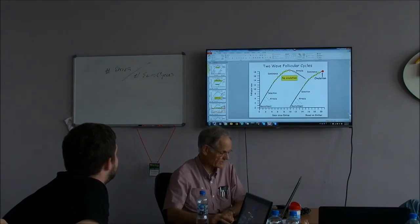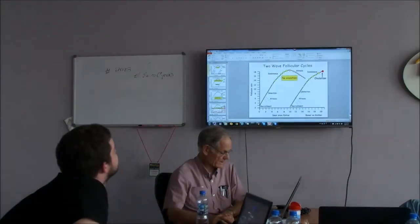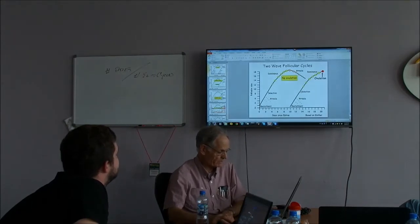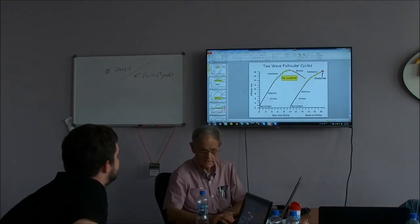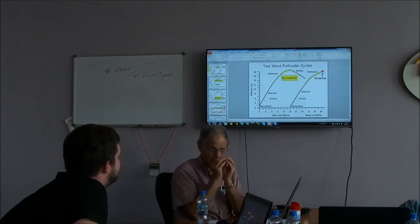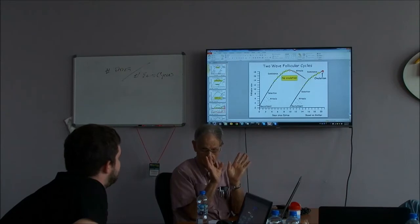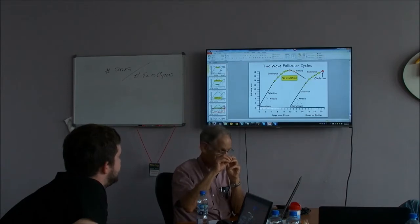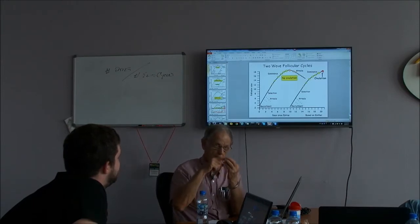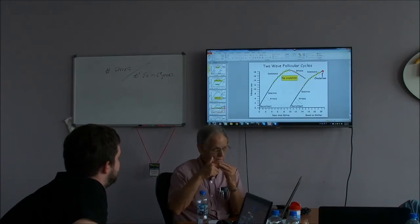The second follicular wave starts here at about day ten. The selection again occurs a few days later. This follicle goes on, but instead of dying, it ovulates. Ovulation means it bursts open. The egg flows out.